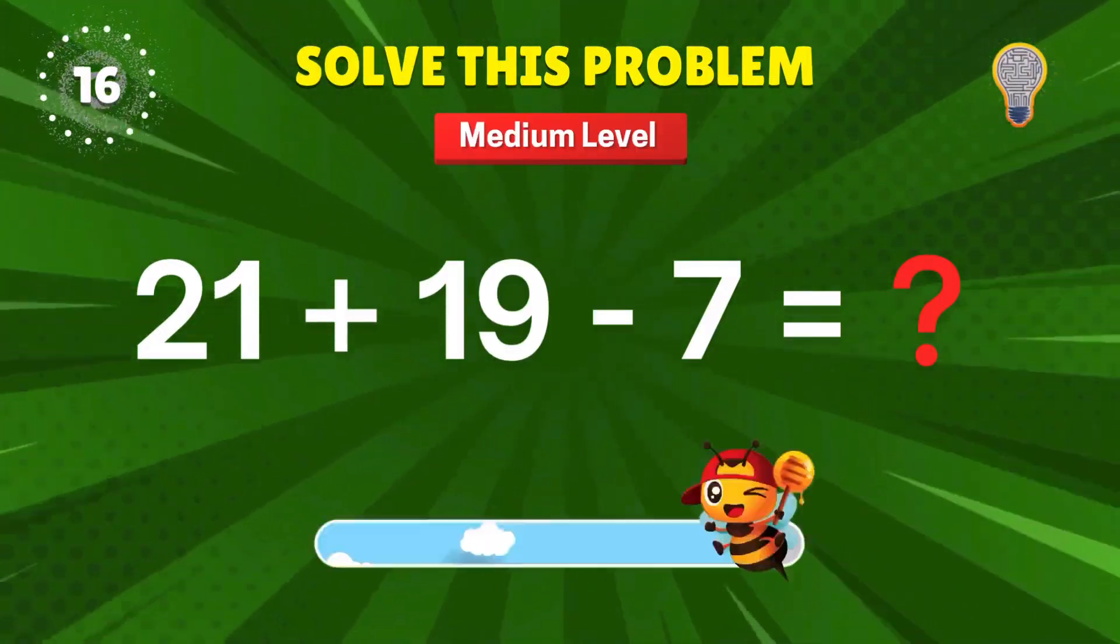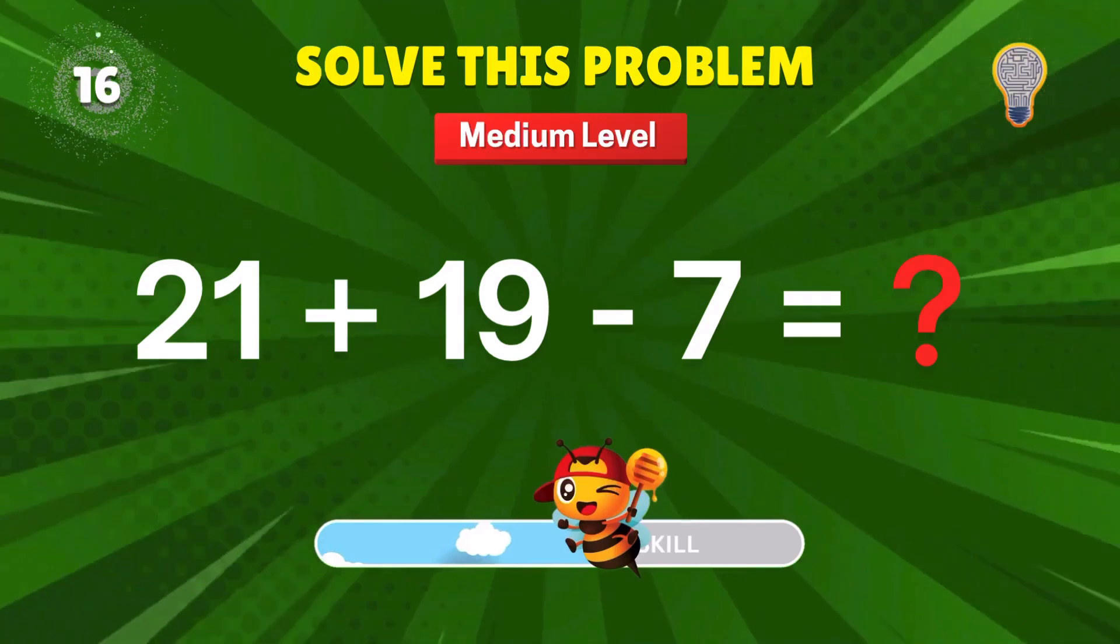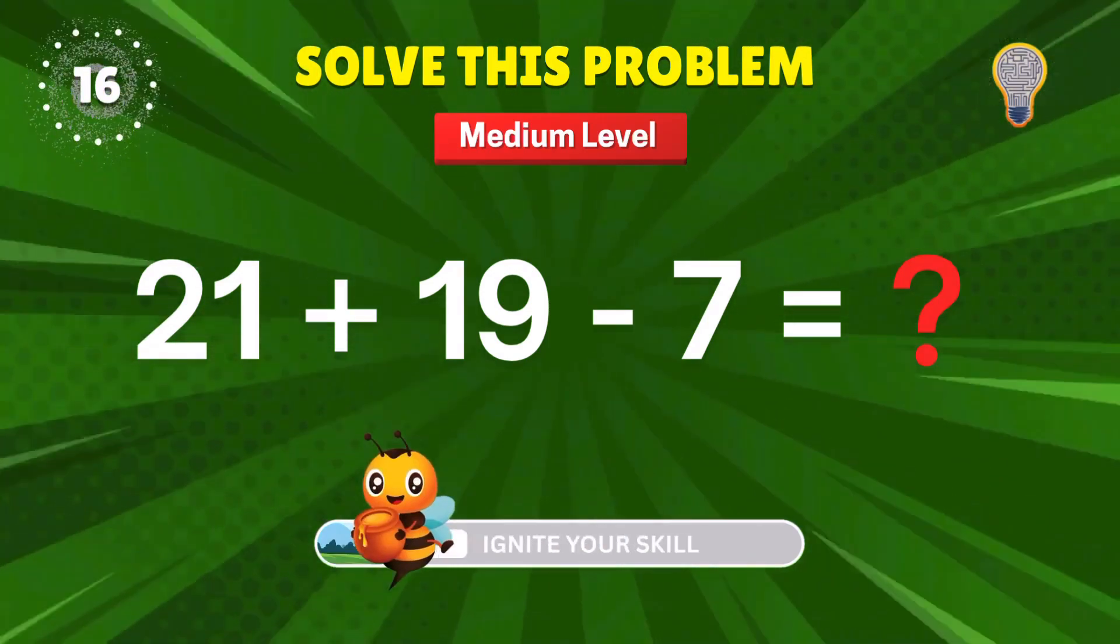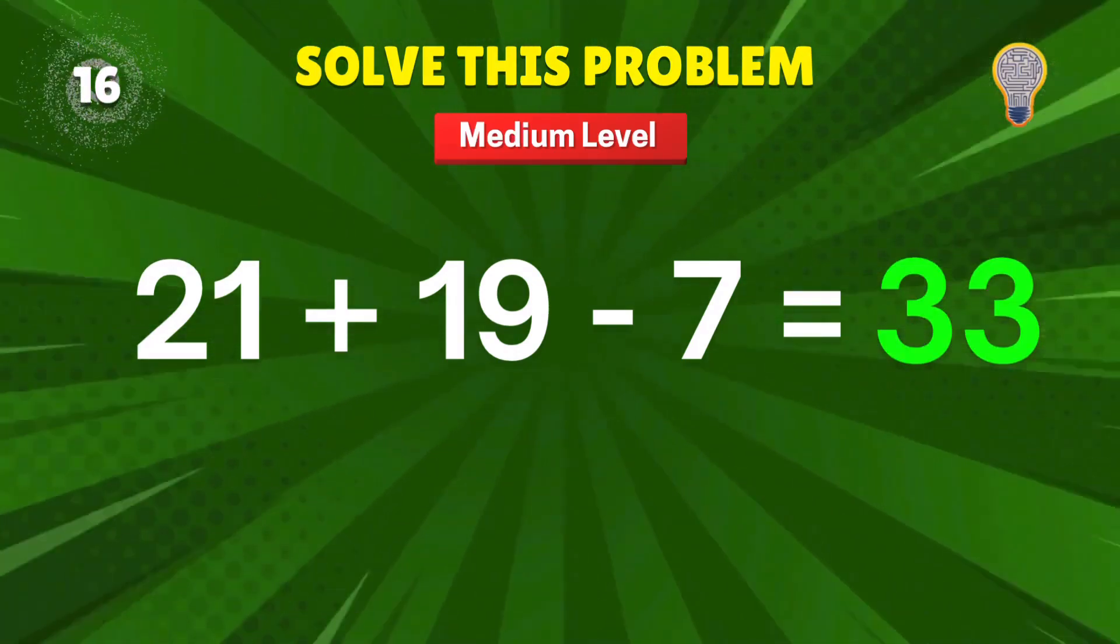21 plus 19 minus 7? Keep calm and do the math. 33. Good vibes and good points.